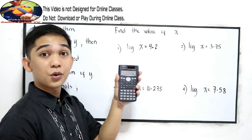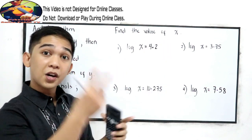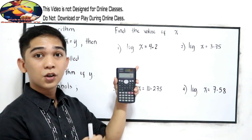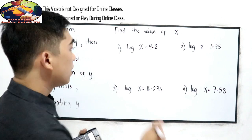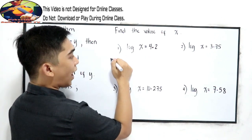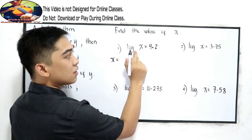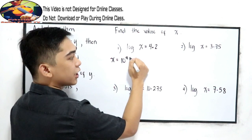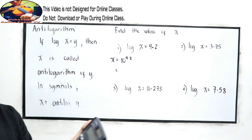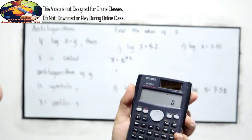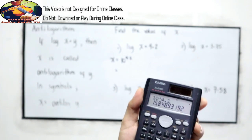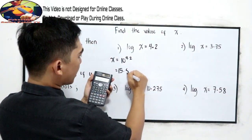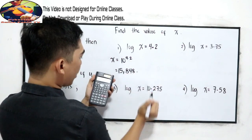We're going to use the calculator to solve for the value of x. There are two ways to solve the following problems: we have the exponential form, or we can just use our calculator. In exponential form, this is equal to x. We know that the base is 10, and that is raised to 4.2. So we get 10 raised to 4.2, which gives us 15,848.93.